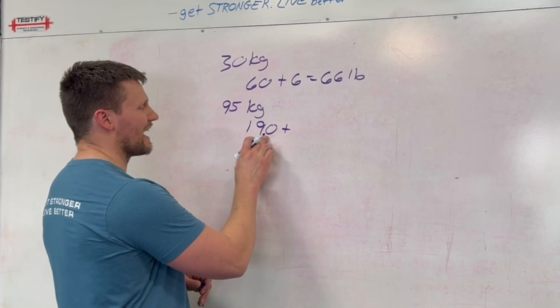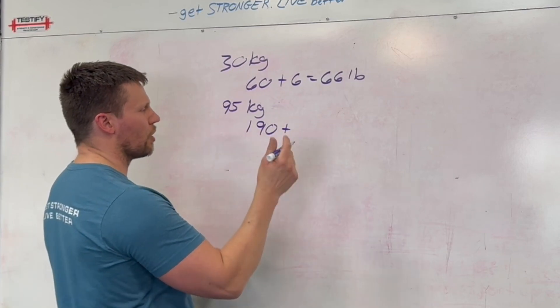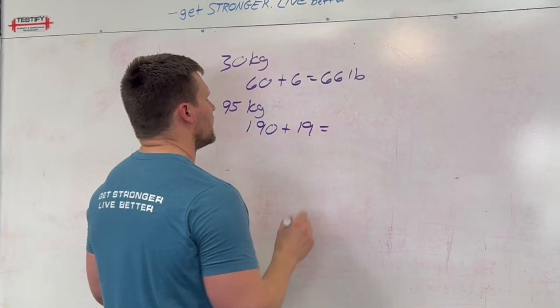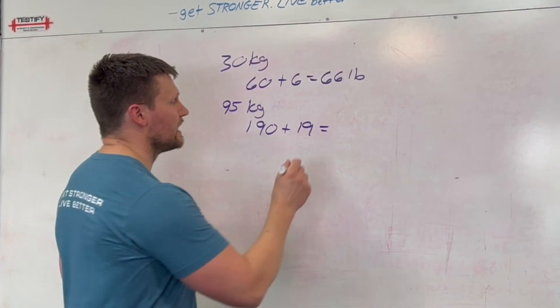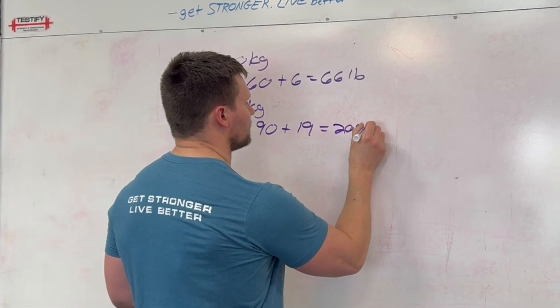So now you've got 190. You're going to move the decimal over one. You've got 19, so you've got 19.0 or just 19. Add those 2 together, 190 plus 19, you get 209 pounds.